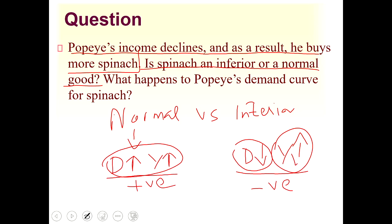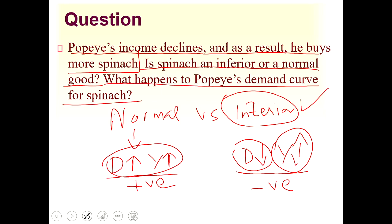In this question, Popeye's income is declining but his demand for spinach is increasing — that is a negative relationship. So for Popeye, spinach is an inferior good. The demand for spinach has increased, so the demand curve will shift upward from D1 to D2.